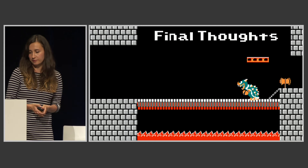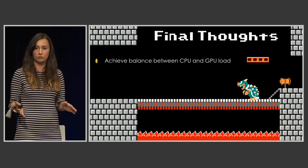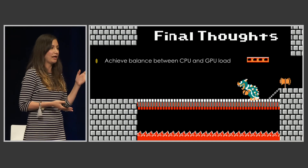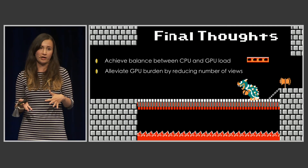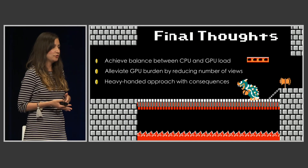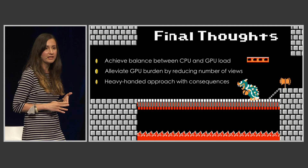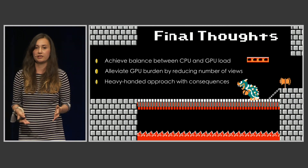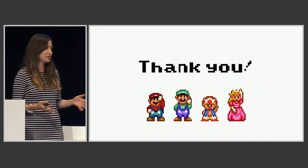The takeaway is that this approach is about balancing the load between the CPU and the GPU. Use Instruments to identify exactly where your bottlenecks are, and if they're on the GPU, investigate how to help. If you decide to alleviate the burden on the GPU, the best way is to flatten the view hierarchy into as few views — and therefore as few textures — as possible. This is a heavy-handed approach with trade-offs: more code complexity and possible losses in accessibility. Think carefully about whether you'll benefit from it and whether you should go with this approach. Thank you all very much for your time and attention.